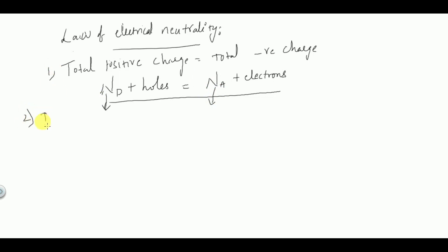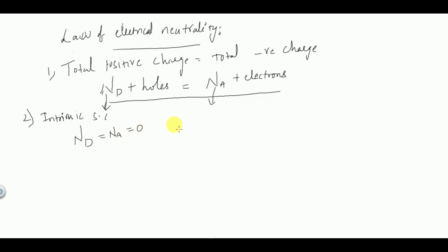In the case of an intrinsic semiconductor, we do not have any doping. So ND equals NA equals zero. Therefore, the number of holes equals the number of free electrons. In the intrinsic semiconductor, both ND and NA are equal to zero.